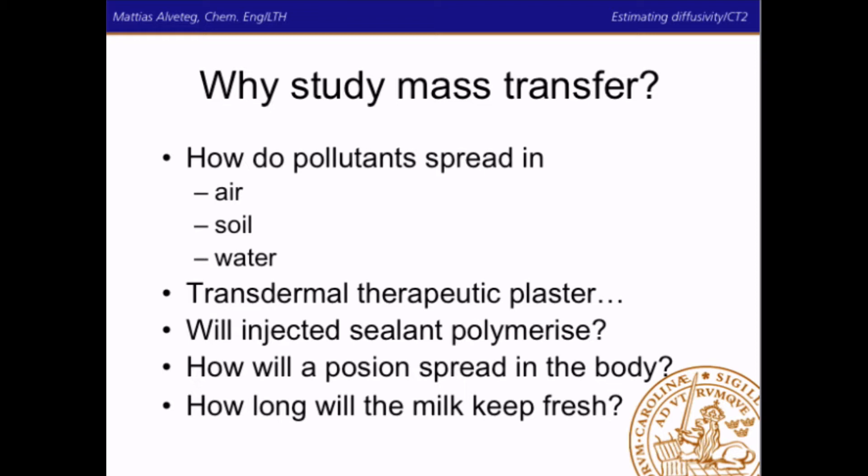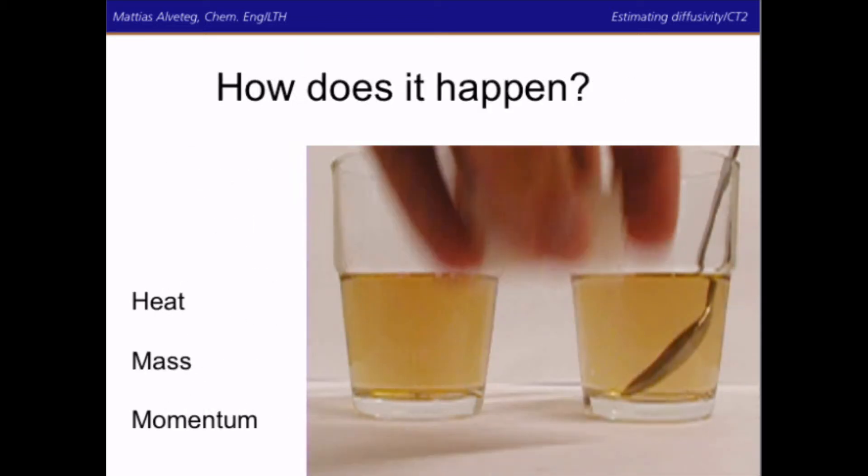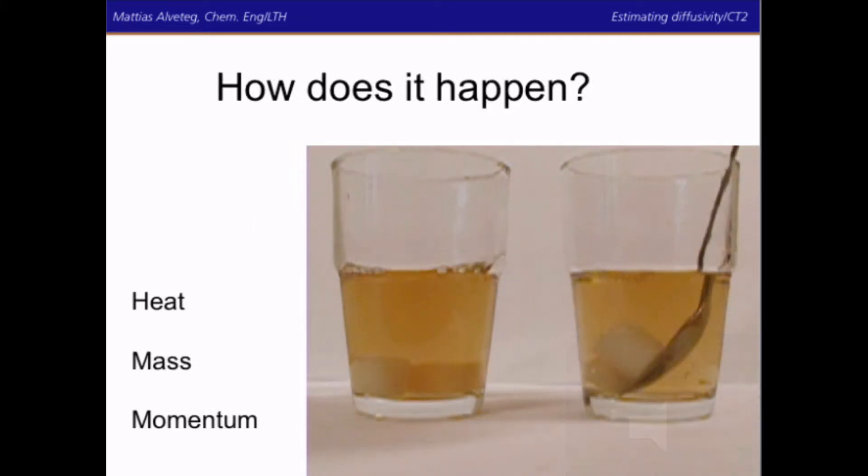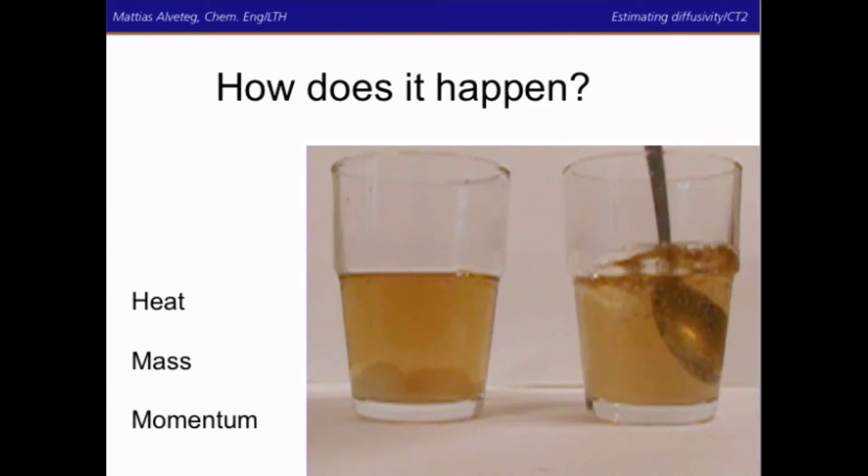So, how does it happen? Well, we all know that if you have some sugar cubes and put that into some tea, the sugar cubes will dissolve faster if you stir. And this is simultaneous transport of heat, mass and momentum. So, why does it dissolve faster if we stir?